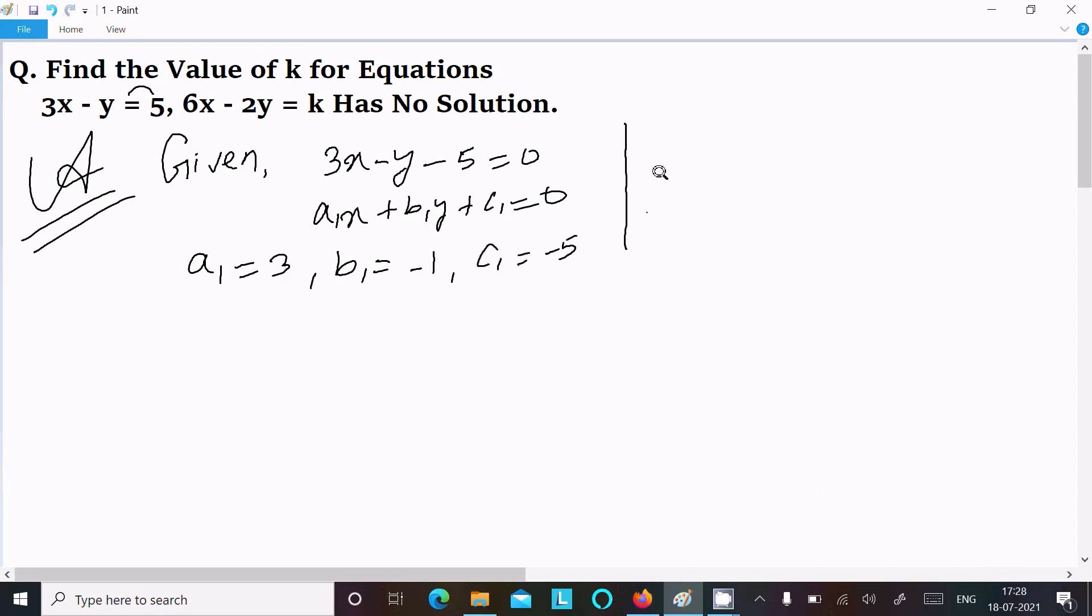Now let's write the second equation: 6x minus 2y, move k to the left side, so minus k equal to 0. This equation is in the form a2x plus b2y plus c2 equal to 0. Here a2 equals 6, b2 equals minus 2, and c2 equals minus k.